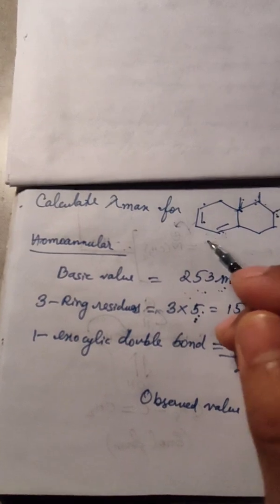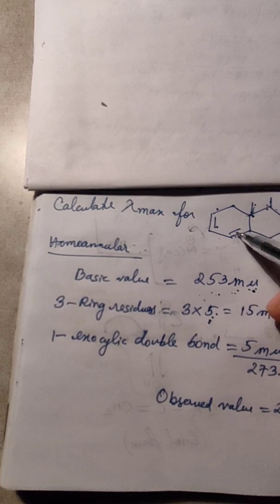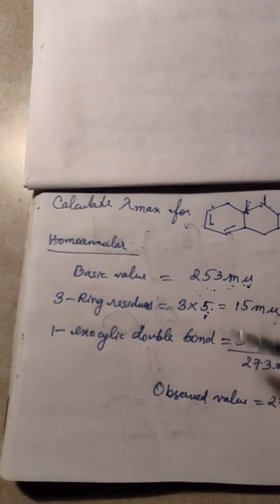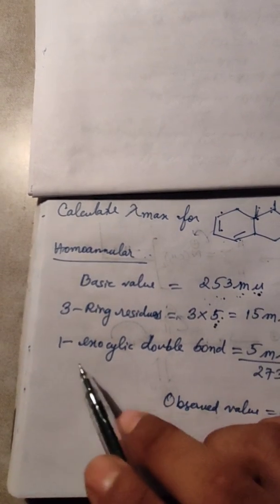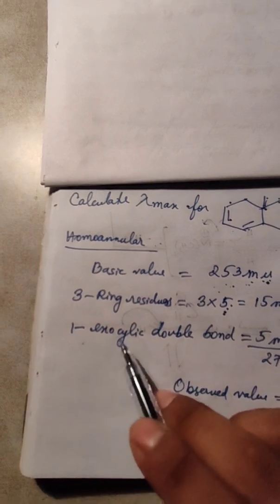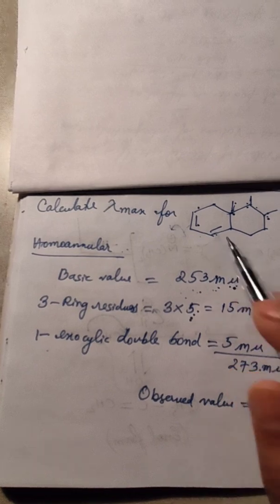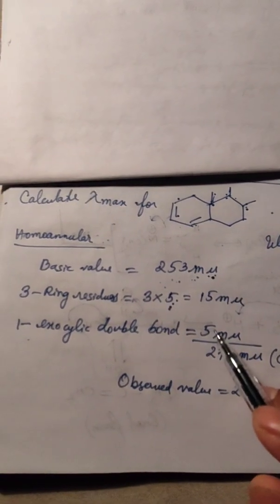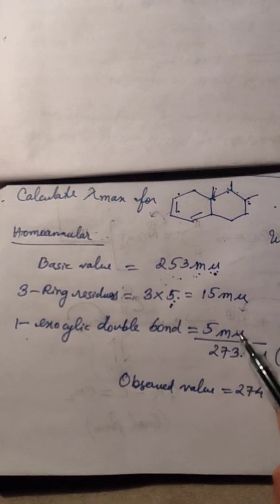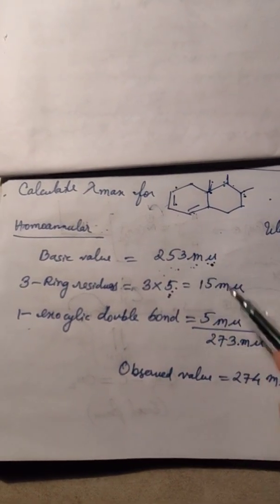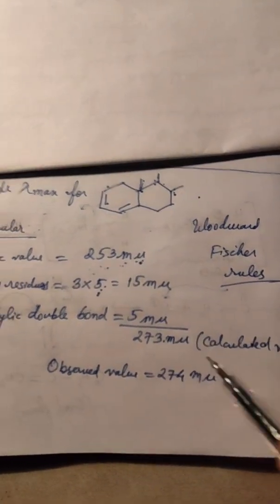We have to calculate this. If the double bond is present here and also here, we will say there are two exocyclic double bonds. Here we calculate one exocyclic double bond. The exocyclic double bond value given by Woodward-Fisher rules is 5 millimicrons.